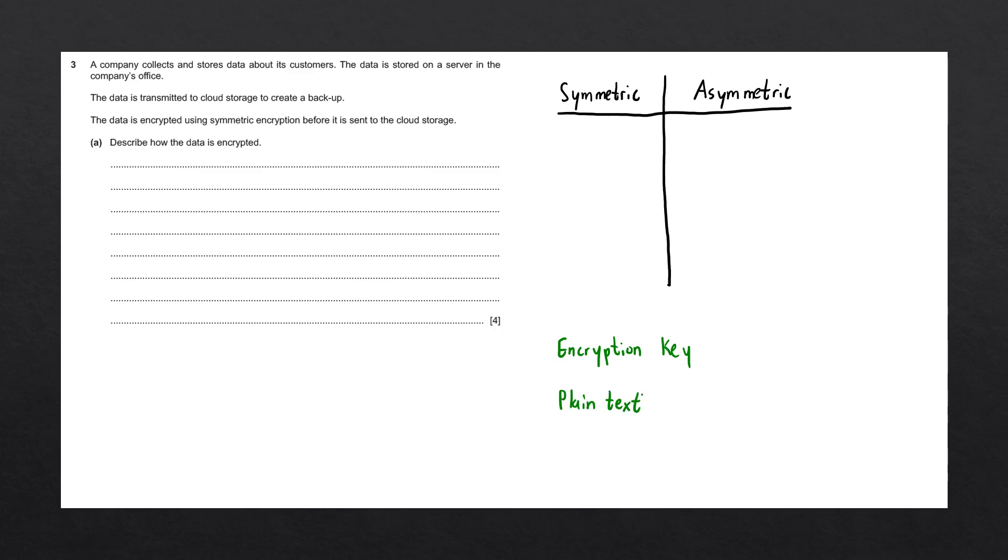When we encrypt data, we are converting plain text into what's known as ciphertext. Ciphertext is meaningless and without the encryption key, we would not be able to understand what this data means. We can now safely transmit data from computer A to computer B. And even if someone gains access to the data during transmission, they will not be able to read it without this encryption key.